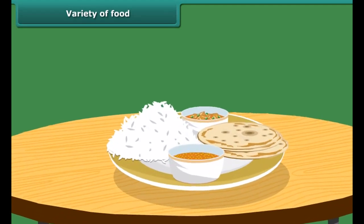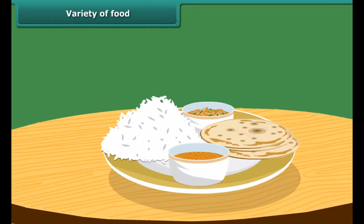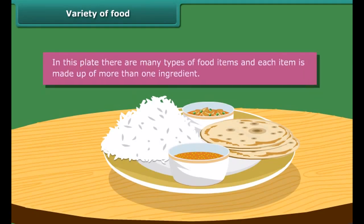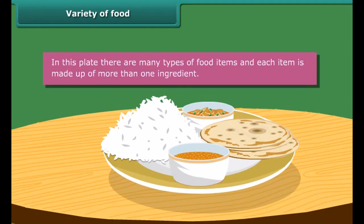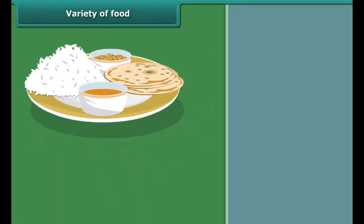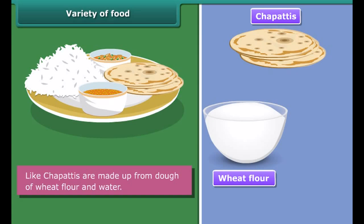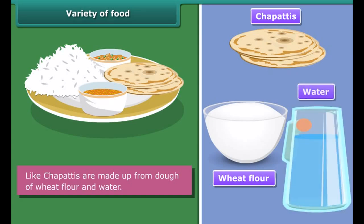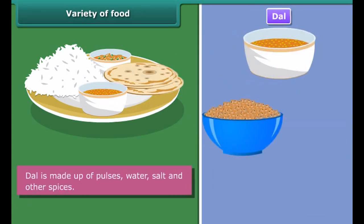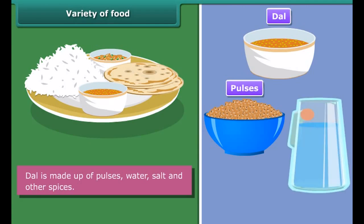Look at the food. What did you notice? In this plate there are many types of food items and each item is made up of more than one ingredient. Like chapatis are made up from dough of wheat flour and water. Similarly, dal is made up of pulses, water, salt and other spices.